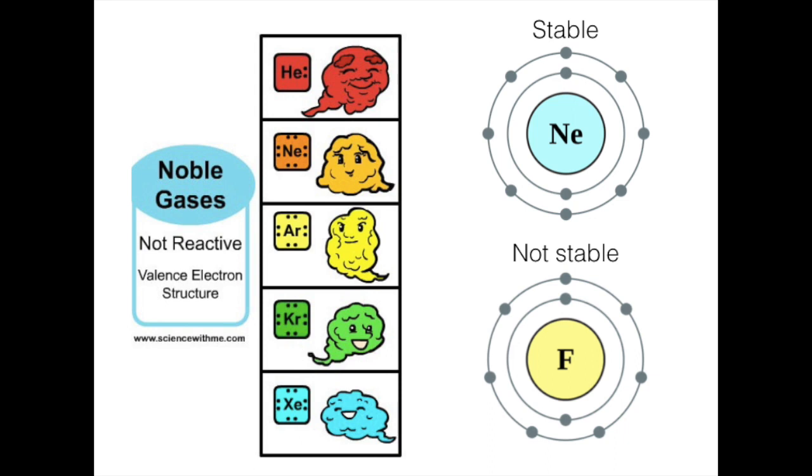The halogens and noble gases have numerous differences and similarities, though these two groups have more differences than similarities. For one, the halogens are reactive, they are diatomic and contain all three types of matter. Though the noble gases are only gases and are not very reactive at all, as illustrated in my picture on the left.